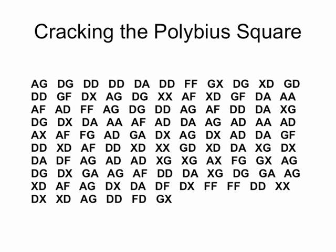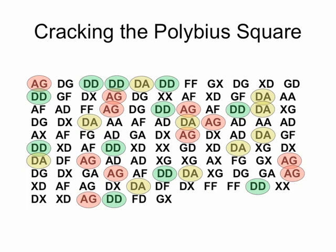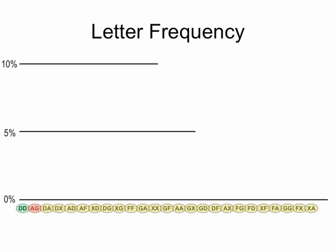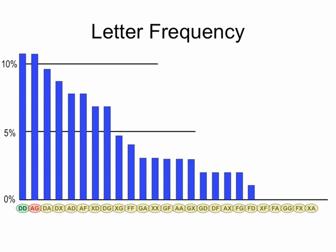Now we're going to talk about the solution and how to go about finding it. The first thing you probably noted is that some of these two-letter combinations occur much more frequently than others. DD occurs 11 times, as does AG. DA occurs a little less often — 10 times — and DX occurs 9 times. That's the frequency graph we get when we dissect that cipher.